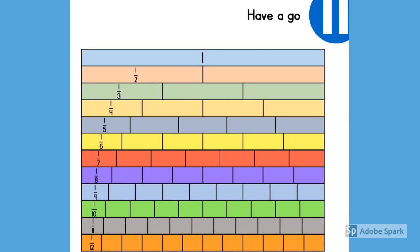This is called a fraction wall. You can see that the first bar model is a whole one. And then the bar models underneath are split into the fractions. From half to third to quarter all the way down to twelfths. We use the fraction wall to help us to find equivalent fractions. Pause the video and have a go to see if you can find any equivalent fractions.